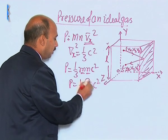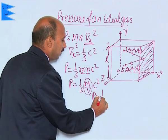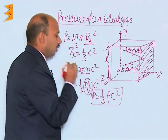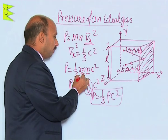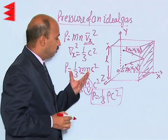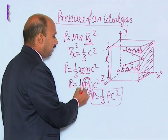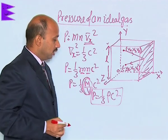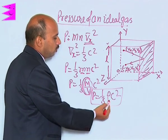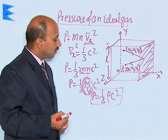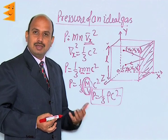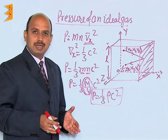Using the relation that m times n equals rho (density) — since m into n can be written as mass per unit volume — the pressure formula becomes P = (1/3) rho C². This is the expression for the pressure exerted by an ideal gas on the walls of the container in which it is filled.